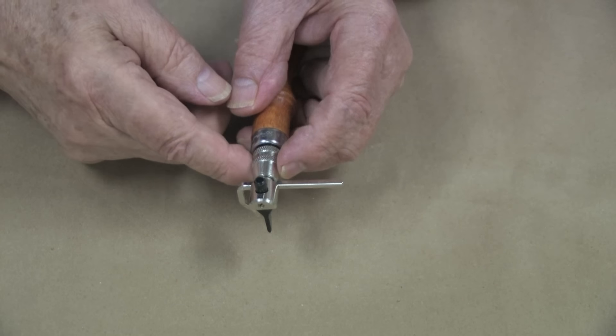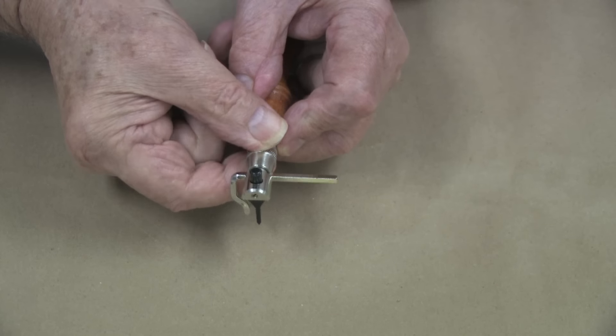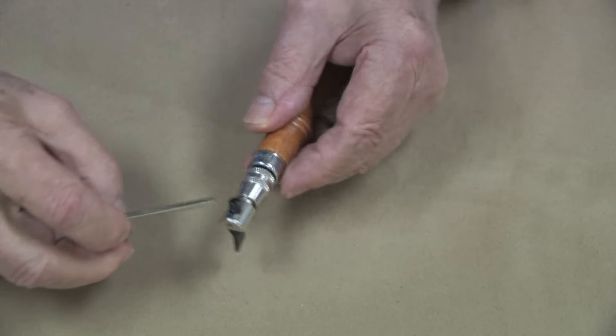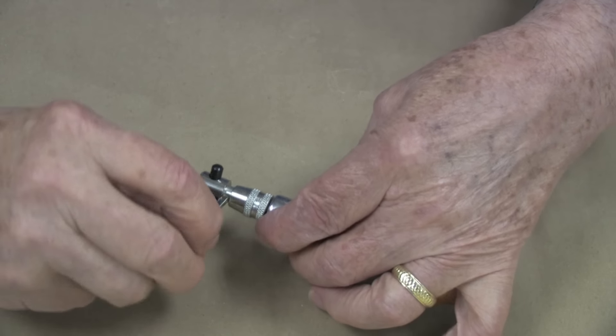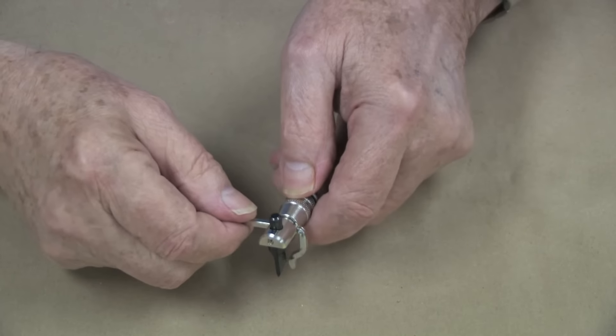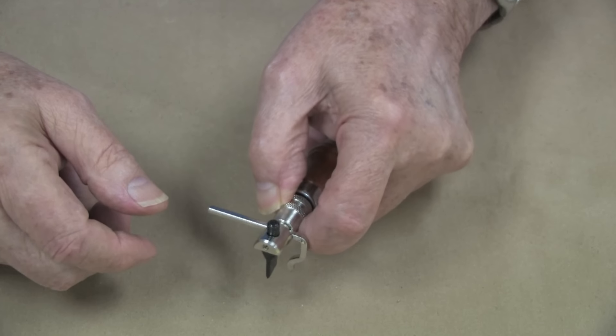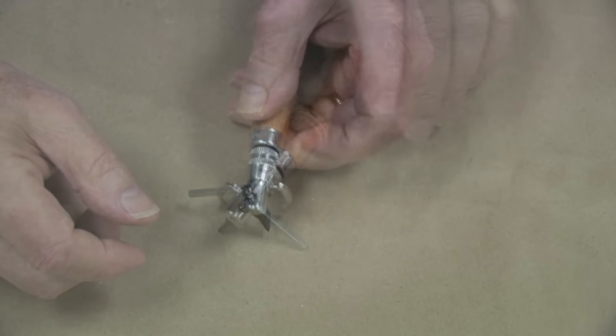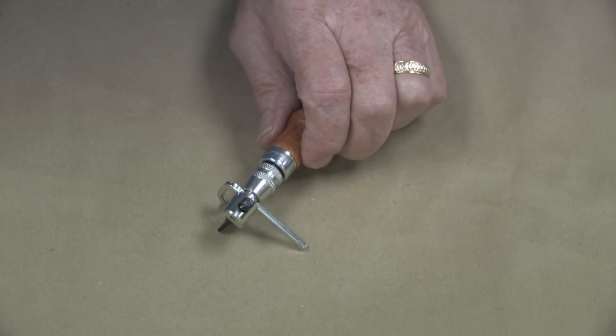The guide bar can be located in the chuck for either left or right handed users. Simply loosen the adjustment ring, remove the adjustment guide and insert from the other side of the chuck. Tighten the adjustment ring and the change has been made.